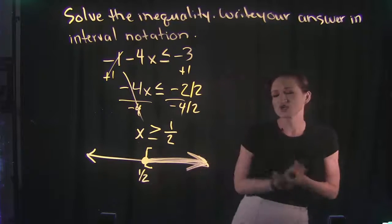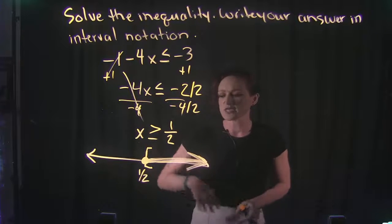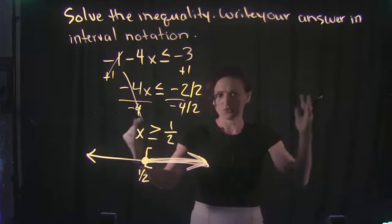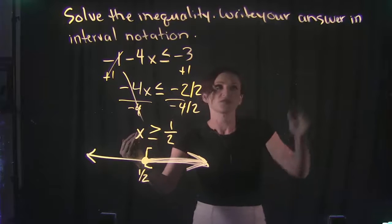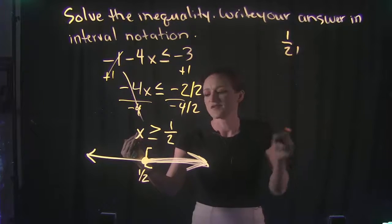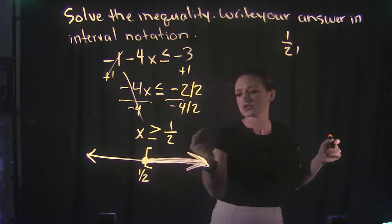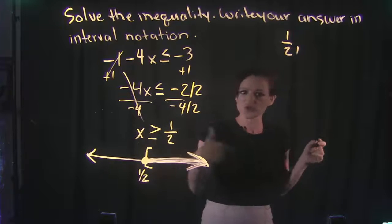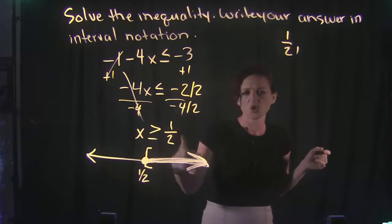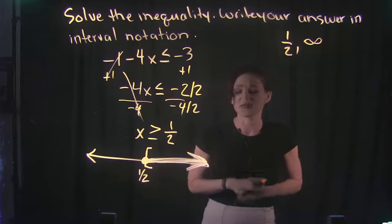So interval notation based off of this. So remember, interval notation is your leftmost answer, your rightmost answer. So our leftmost answer over here starts at 1 half, and then it goes off. And this points to the right direction here. So that means that it's going to go on and on and on. And that is a positive infinity.